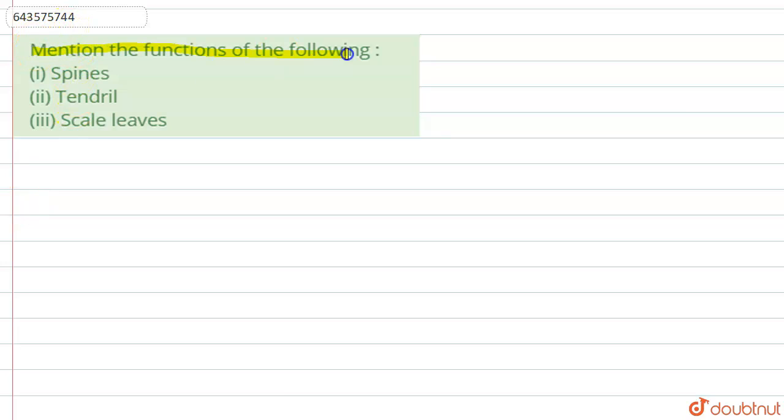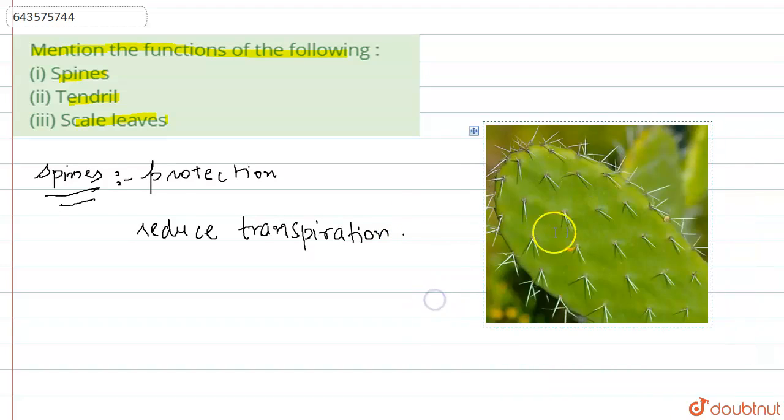Spines, tendril, and scale leaves. Spines are present on many plants. The main function of spines is to provide protection and to reduce the transpiration rate. In spines, the surface area reduces, which reduces transpiration. Here is a diagram of spines - these are the spines present in cactus plants.